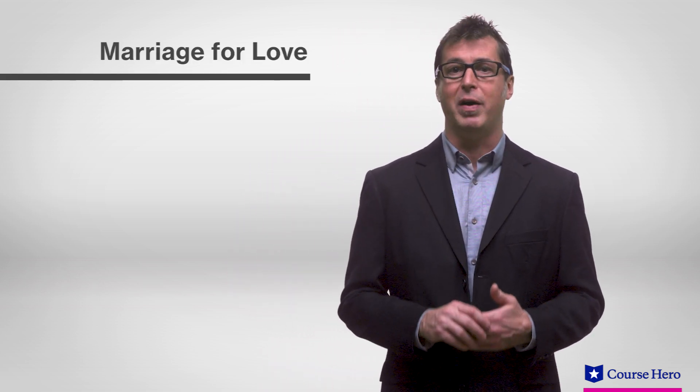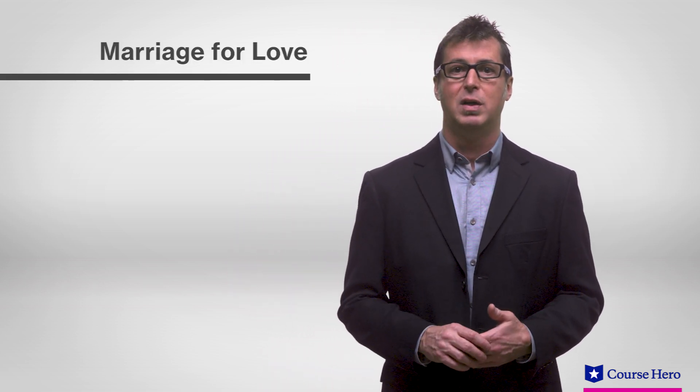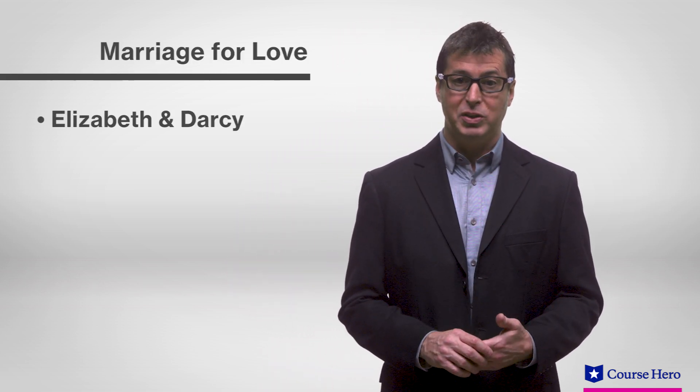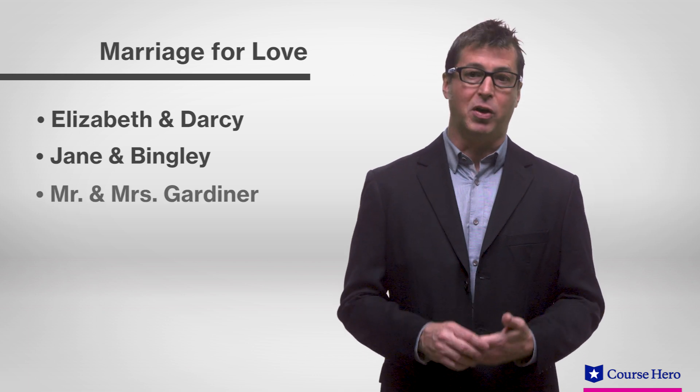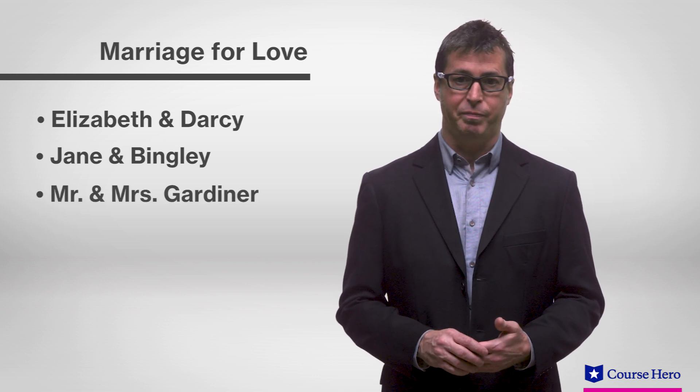By the end of the novel, only three couples marry for love: Elizabeth and Darcy, Jane and Bingley, and the Gardiners. Austen uses these three couples to illustrate what honest relationships look like.